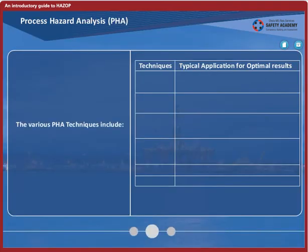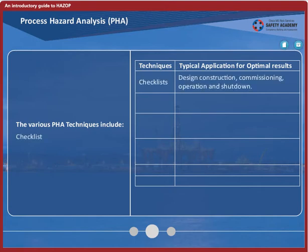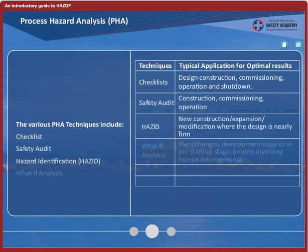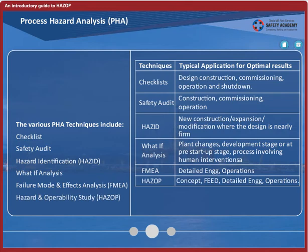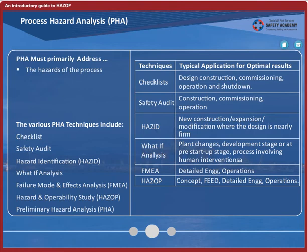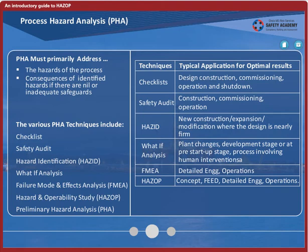Various process hazard techniques are available to us today, like checklists, safety audits, hazard identification, what-if analysis, failure mode and effects analysis (FMEA), hazard and operability study (HAZOP), and preliminary hazard analysis (PHA). PHA must primarily address the hazards of the process, consequences of identified hazards if there are nil or inadequate safeguards, and the engineering and administrative controls applicable to the hazards and their interrelationships.